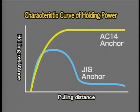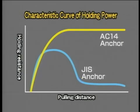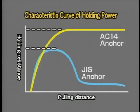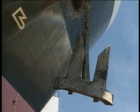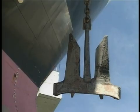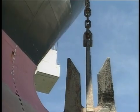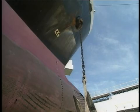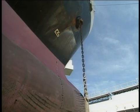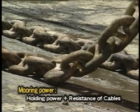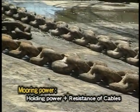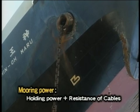This curve shows the results of anchor pulling tests. Holding power is the resistance created by the anchor when it is pulled; the maximum resistance is called holding power. In addition to the holding power of the anchor itself, the effect of the cable paid out cannot be neglected. The total mooring power is the sum of the holding power of an anchor and the resistance of cable laid over the bottom.